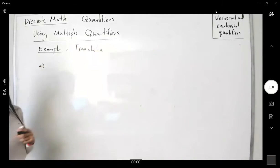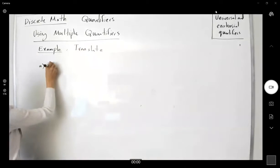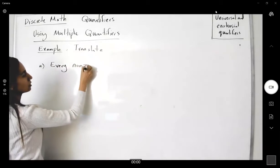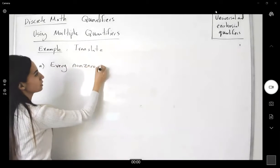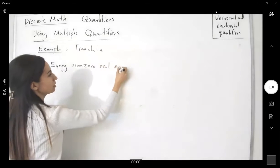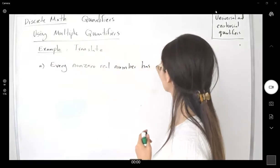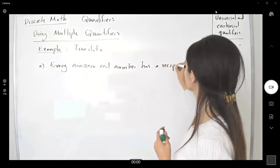The first one says every non-zero real number has a reciprocal.